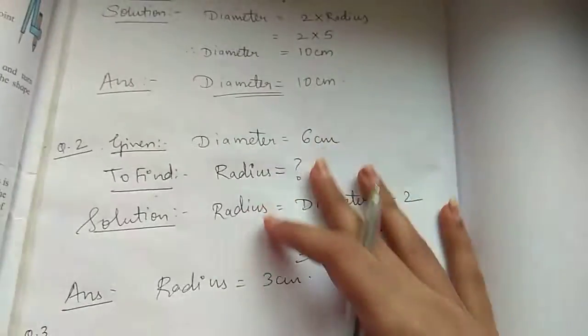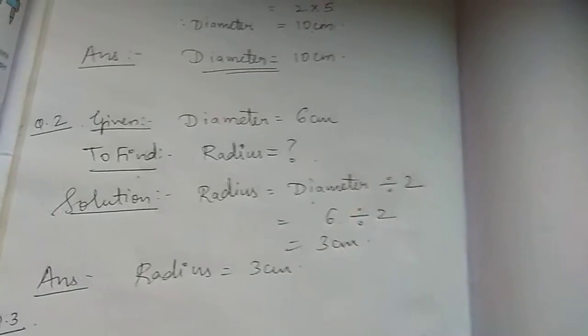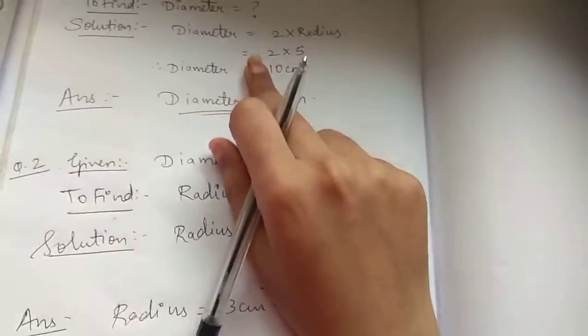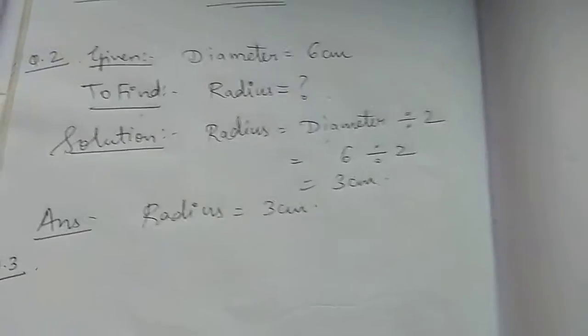So this is the second sum. It's very easy, it gets over in three steps. Just we have to remember formulas properly. Let's see.